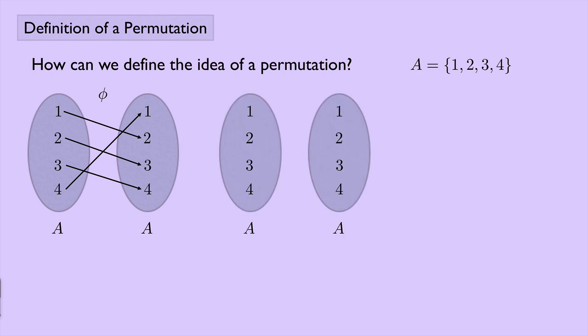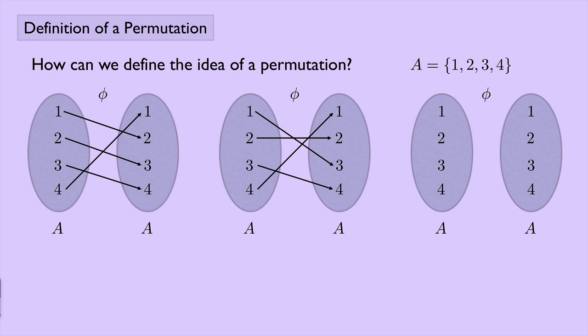Another example, maybe we have the same sets, A: one, two, three, four. And maybe we let phi mean that one goes to three, two stays right where it is, three goes to four, and four goes to one. Or maybe one more example of phi, maybe everything just stays right where it is.